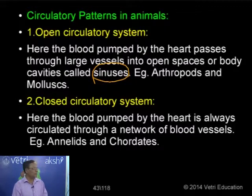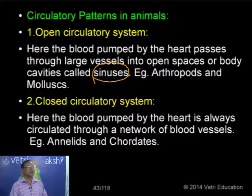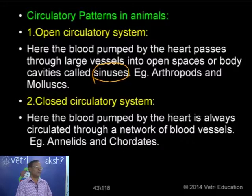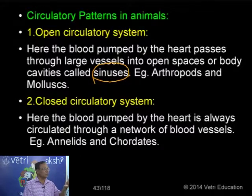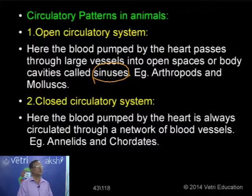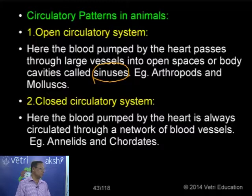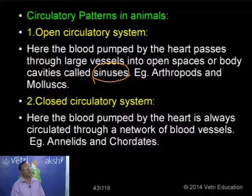In the closed circulatory system, the blood circulates through a system of tubes called blood vessels and is not emptied into open spaces. The blood is pumped by the heart and always circulates through a network of branched tubes — the blood vessels. This is very common in annelids and chordates. In cockroaches and pond snails — arthropods and mollusks — we have an open circulatory system. But in all chordates and annelids, we have a closed circulatory system.